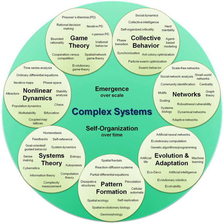Complex systems is chiefly concerned with the behaviors and properties of systems. A system, broadly defined, is a set of entities that, through their interactions, relationships, or dependencies, form a unified whole. It is always defined in terms of its boundary, which determines the entities that are or are not part of the system. Entities lying outside the system then become part of the system's environment.